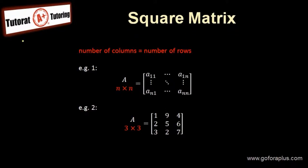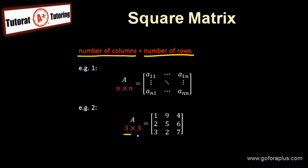So what is a square matrix? A square matrix has the number of columns equal to the number of rows. In Example 1, we have matrix A, n by n — so we have n columns and n rows. Example 2: we have a 3 by 3 matrix. It's a square matrix because it's 3 rows with 3 columns.